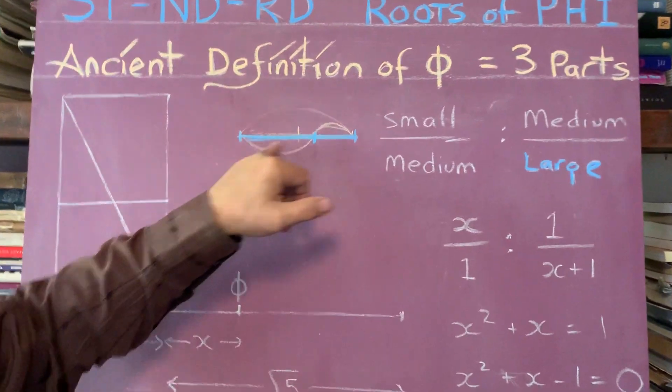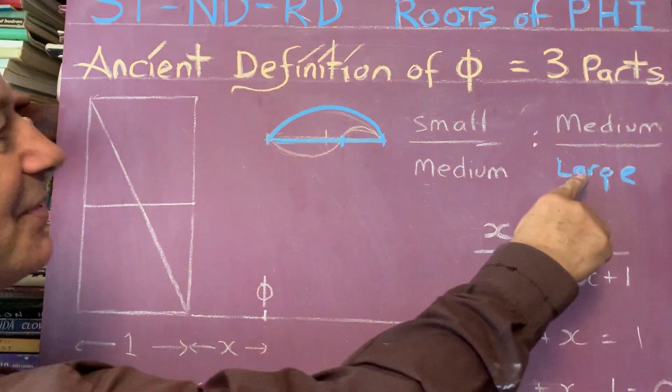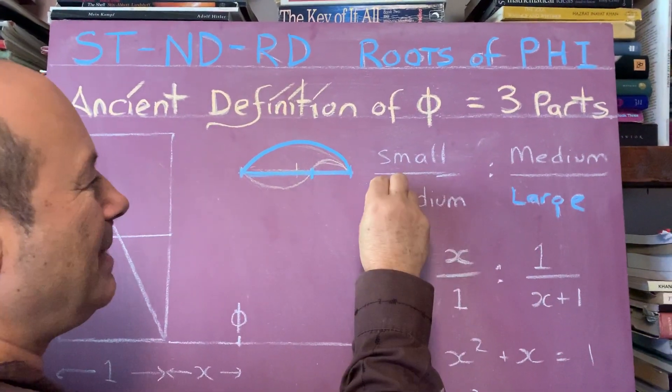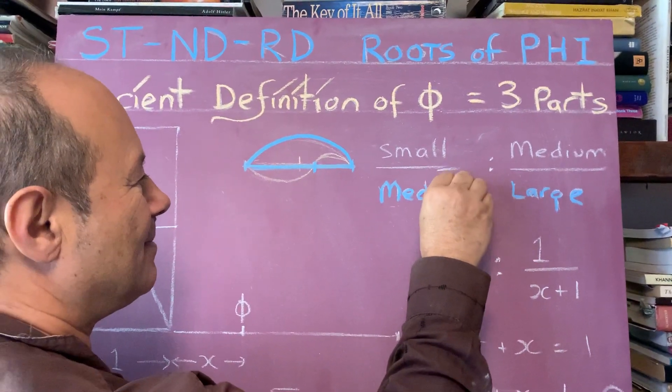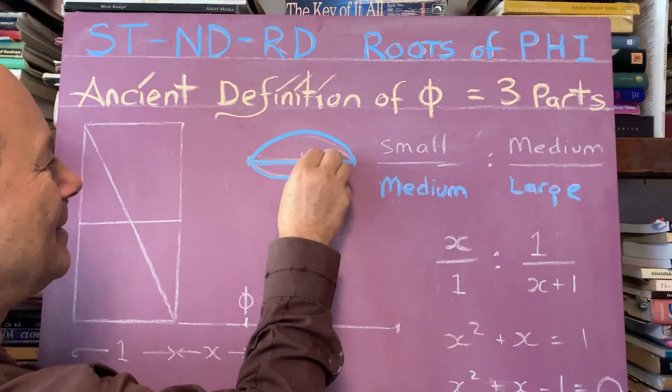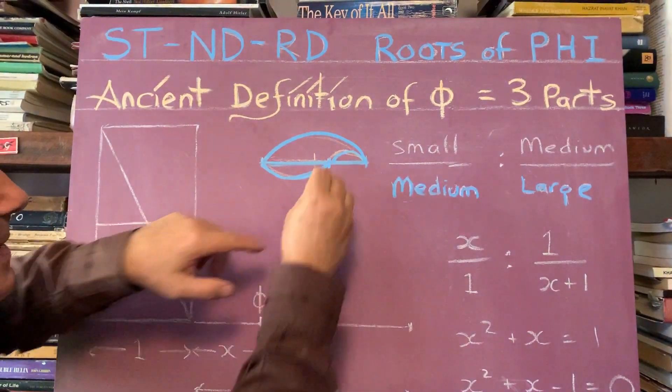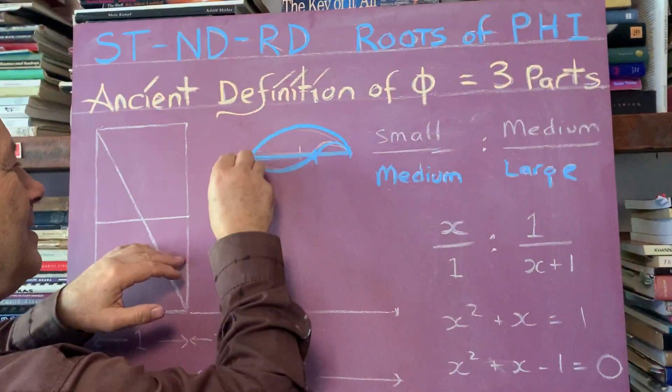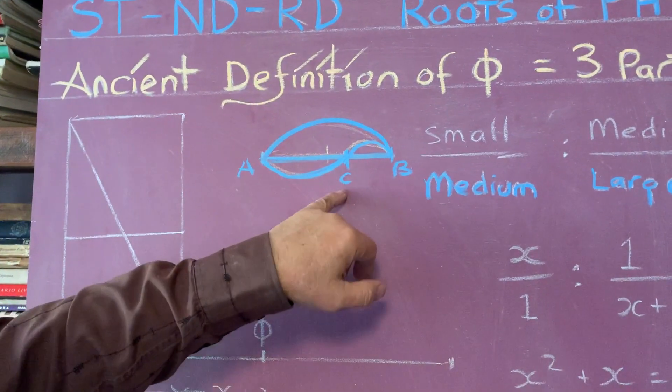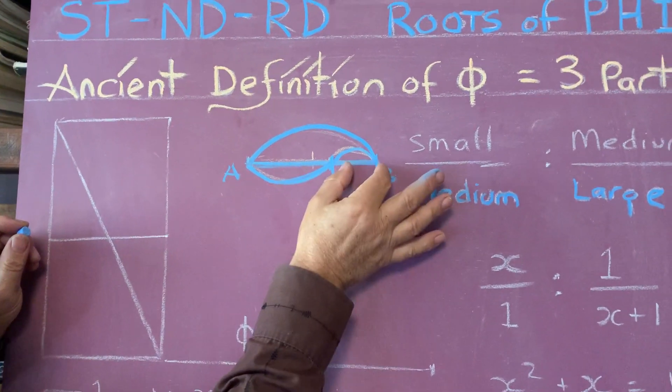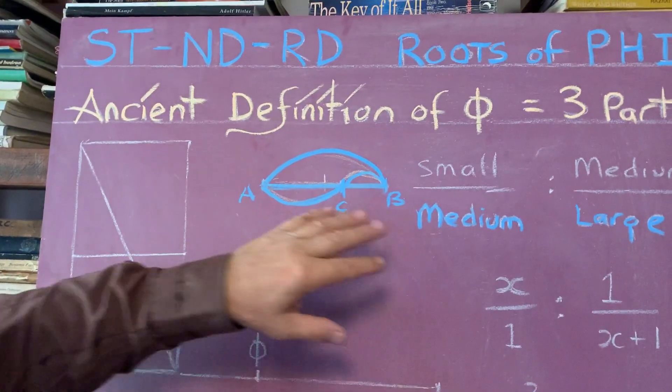We need to divide the whole length into a small length and a larger part. First of all, we've got the whole, the large. Then we've got a medium, we'll call this the medium is the large. And then there's a small part here. So we've successfully divided the line AB at C here, that's in the sweet spot, so that the proportion of the small to the large is the same as the large is to the whole.